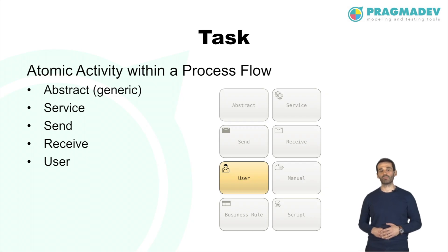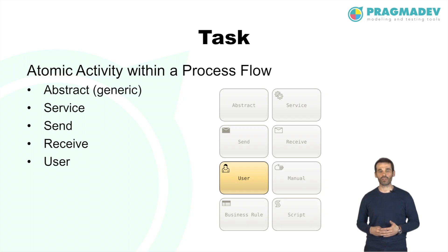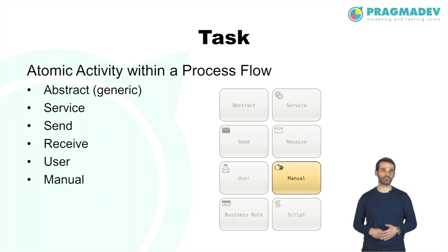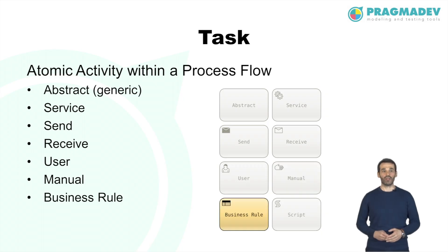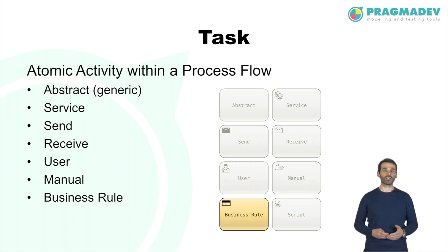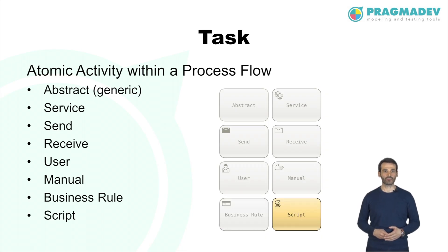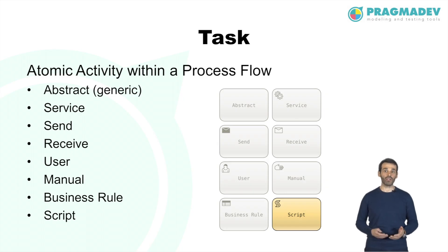A user task is a typical workflow task where a human performs the task with the assistance of a software application. A manual task is expected to be performed without the aid of any software application. A business rule task provides input to a business rules engine and gets the output of calculations that the engine provides. A script task is executed by a business process engine using a script defined in a language the engine can interpret.